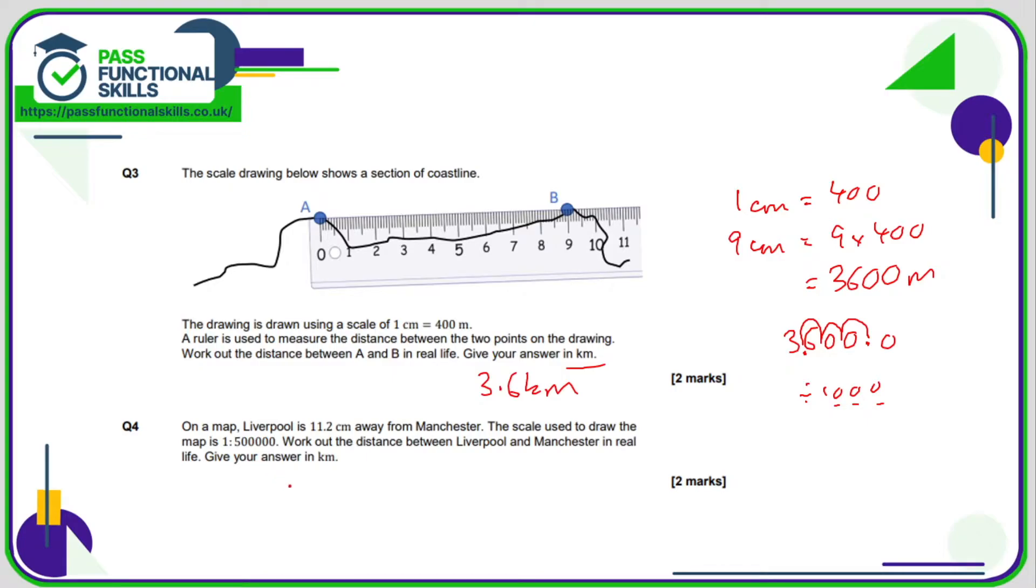In question number 5, we know the scale is 1 to 500,000. So if we're taking a measurement of 11.2 centimeters, then that's going to correspond to 500,000 times 11.2 centimeters in real life, and 500,000 times 11.2 is 5,600,000 centimeters. Now that's not a sensible way of measuring a distance between Liverpool and Manchester. I would expect to give an answer in kilometers, and the question does say in kilometers.